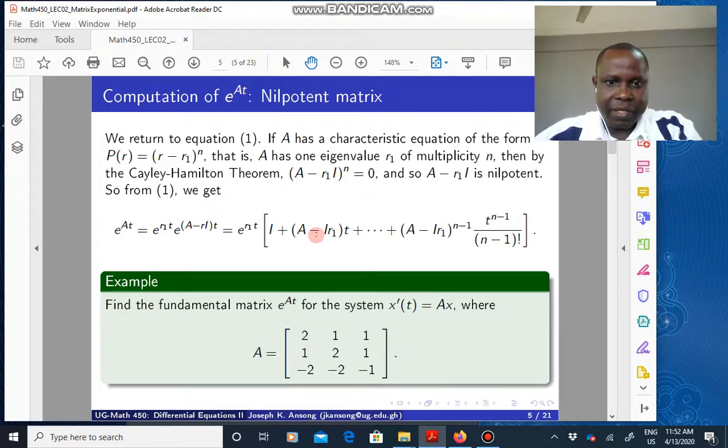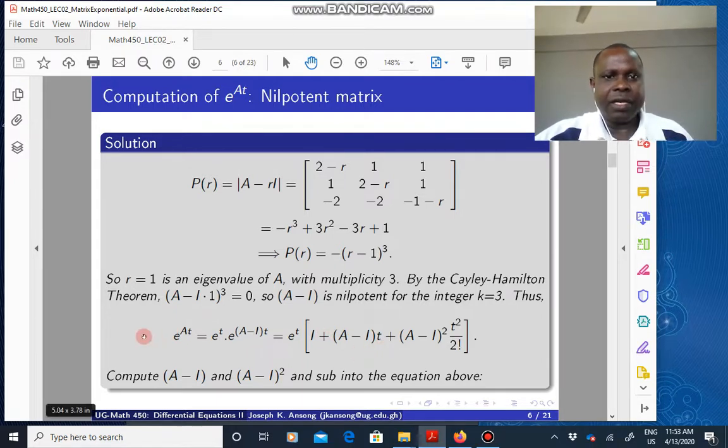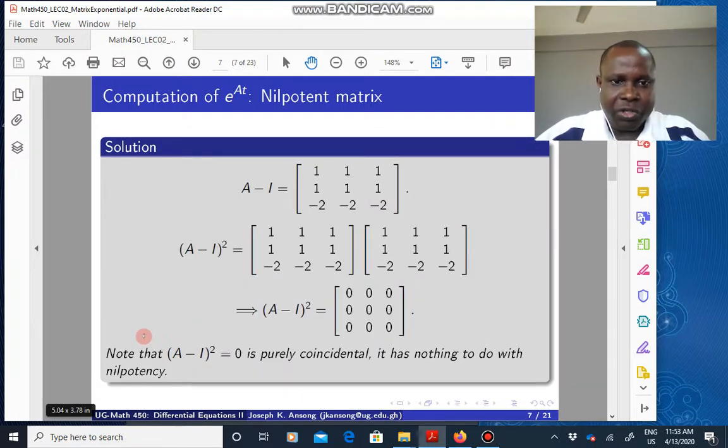the term with the power three vanishes, and subsequent terms will vanish. So if I do that, I'm going to have this expression, I, A minus I times T, and then A minus I squared, T squared over two factorial, because ten to the power three and above won't vanish. And so I just have to compute A minus I, A minus one squared, and put it here, and then I get an expression for exponential. That's what we're going to do here.